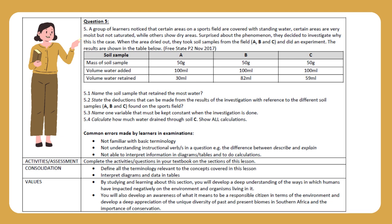Activities/Assessment: Complete the activities and questions in your textbook on the sections of this lesson. Consolidation: Define all terminology relevant to the concepts covered in this lesson, and interpret diagrams and data in tables. Values: By studying and learning about this section, you will develop a deep understanding of the ways in which humans have impacted negatively on the environment and organisms living in it. You will develop an awareness of what it means to be a responsible citizen in terms of the environment, and a deep appreciation of the unique diversity of biomes in southern Africa and the importance of conservation.